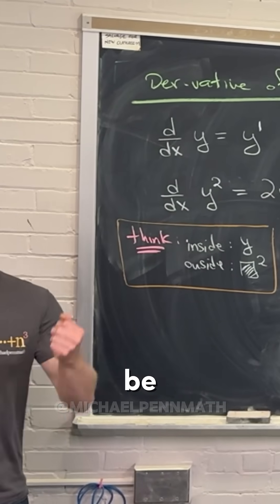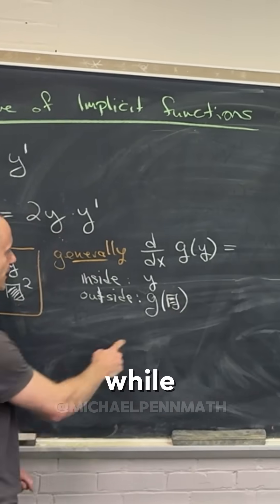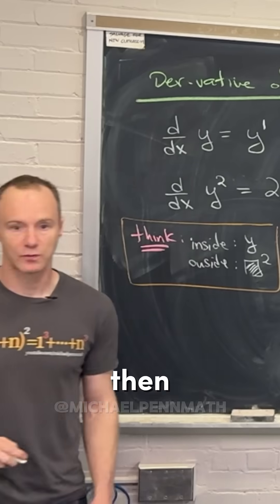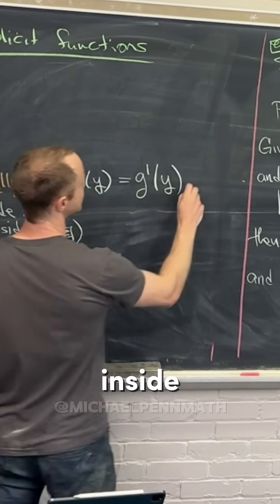So it's going to be the derivative of the outside function. Well, the derivative of g is g prime. We're going to plug y back in, and then we're going to multiply by the derivative of the inside function.